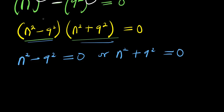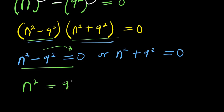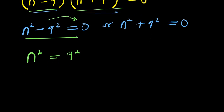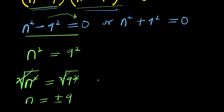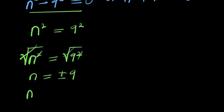Let's solve each of these equations. Starting with the first: moving 9 power 2 over gives n power 2 equals 9 power 2. Taking the square root of both sides, this cancels to give n equals plus or minus 9. So we have n1 equals positive 9 and n2 equals negative 9.